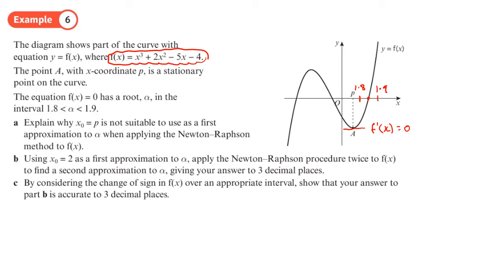Explain why x₀ = p is not suitable to use as the first approximation to α when applying the Newton-Raphson method to f(x). Well, the reason being is, remember the Newton-Raphson formula is x_{n+1} = x_n - f(x_n) / f'(x_n). Now if we use the value of p, which is here, and we put that there, what we're going to get, we're going to get 0. So we'll end up dividing by 0, which is not allowed. So we end up dividing by 0. Not good. Not defined.